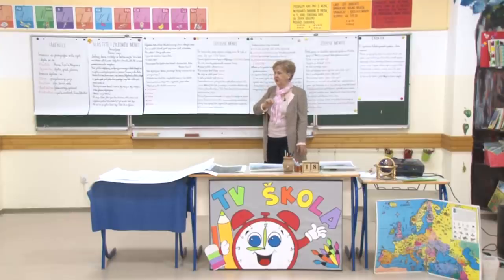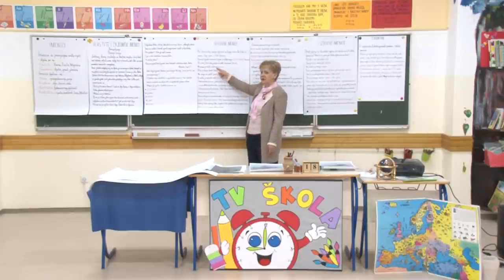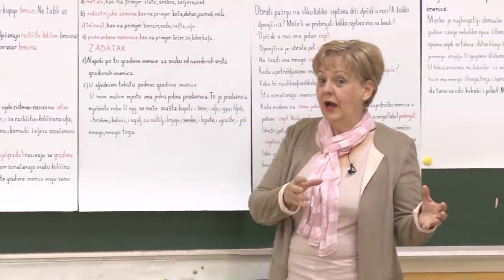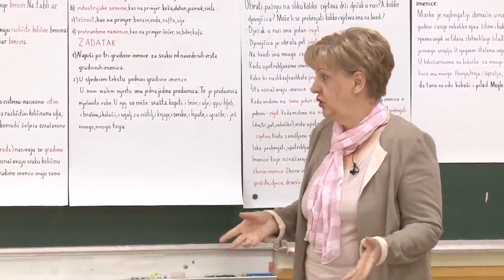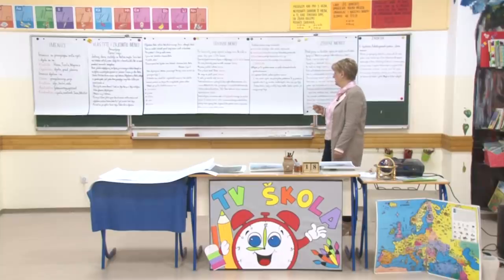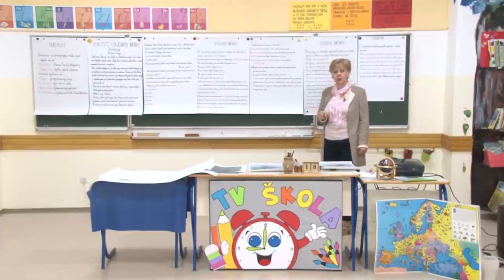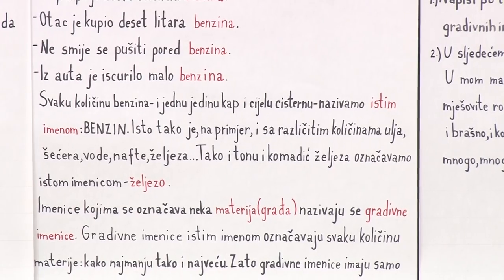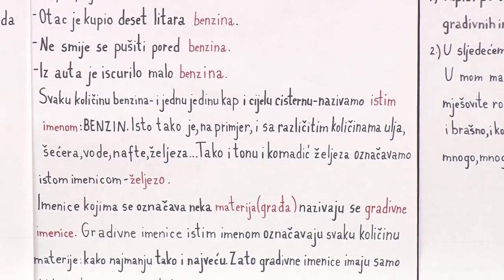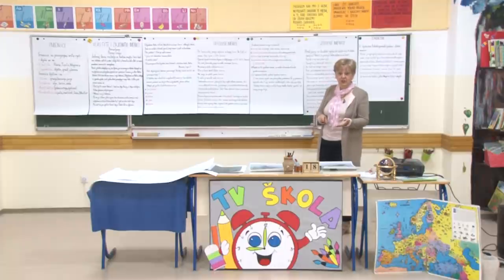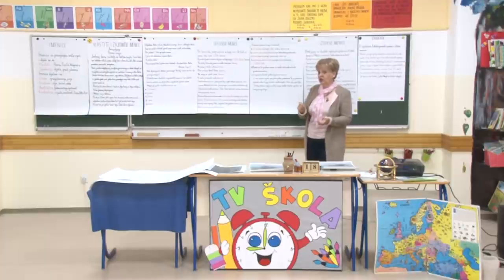I stajemo. Ni po čemu se ne razlikuje - cisterna benzina, litara benzina, pored benzina, malo benzina. Sve ista riječ, a ona riječ prije nje pokazuje količinu. Svaku količinu benzina - jednu jedinu kap i cijelu cisternu - nazivamo istim imenom benzin. Isto tako je sa različitim količinama ulja: kapljica ulja, sto litara ulja, pola litra ulja, malo ulja, puno ulja - ista imenica, isto značenje, a ona riječ prije nje određuje količinu.